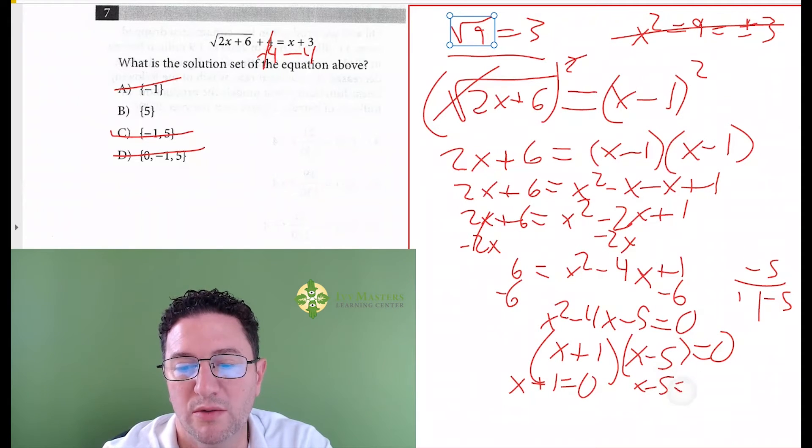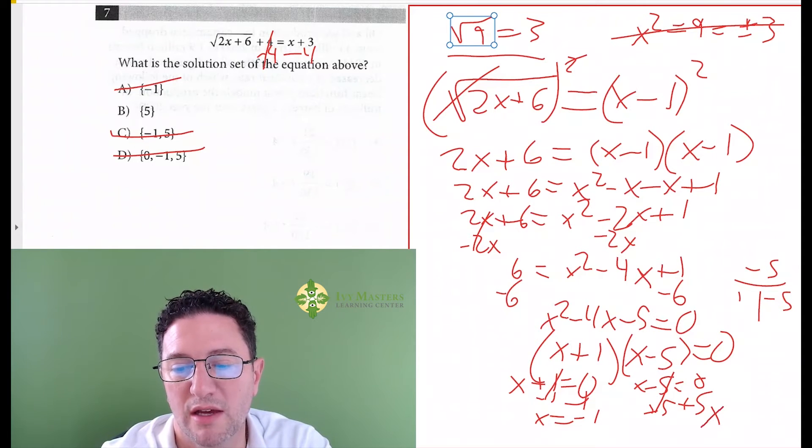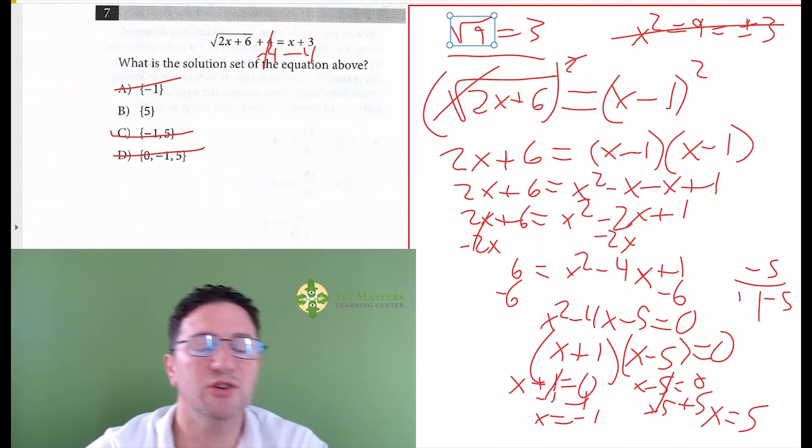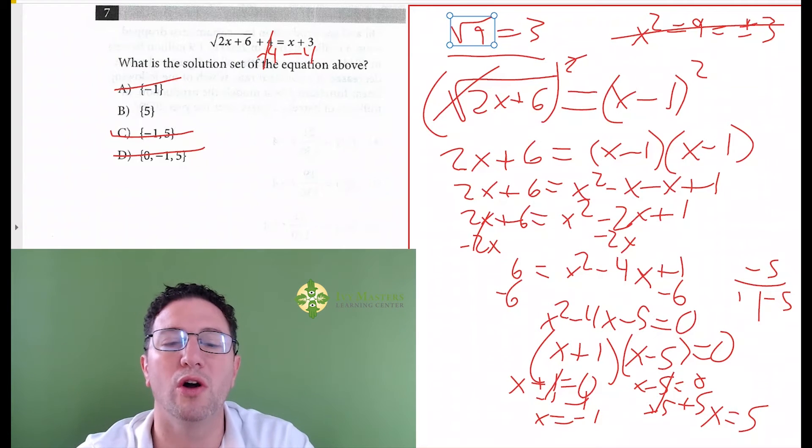Now what you've got to do is you set x plus 1 equals 0, x minus 5 equals 0, and then subtract 1 from both sides. This cancels, x equals negative 1. And then add 5 to both sides. This cancels, you get x equals 5. And then you choose answer choice C, and you're wrong.